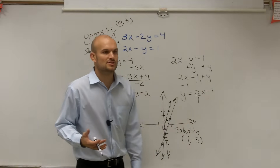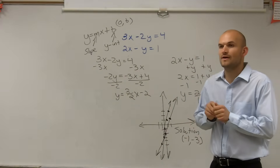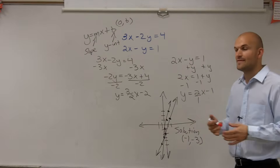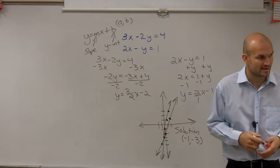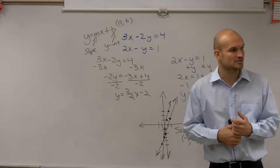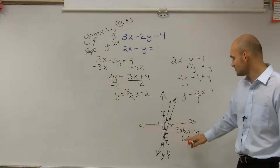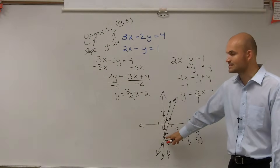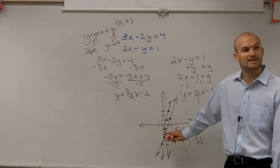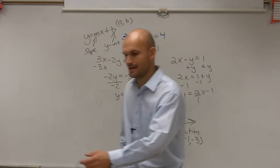So, then we look at our solution. Is it consistent or inconsistent? Since we have a solution, it is consistent. And then, is it independent or dependent? Since we only have one solution, it is going to be an independent solution. So, it's an independent, consistent solution. We can just write our solution as the coordinate point, because at that coordinate point our two graphs are equal to each other for x and y.